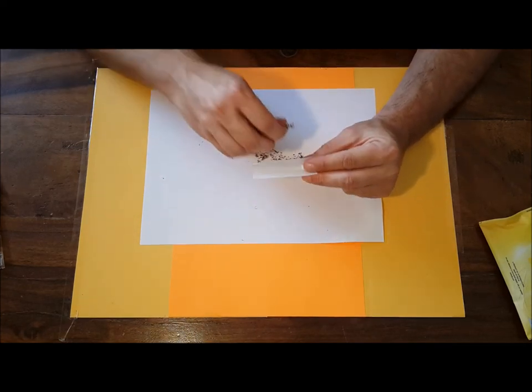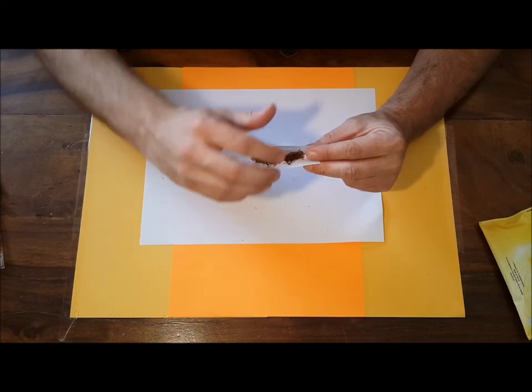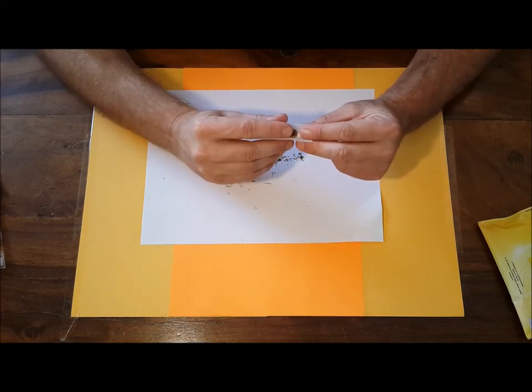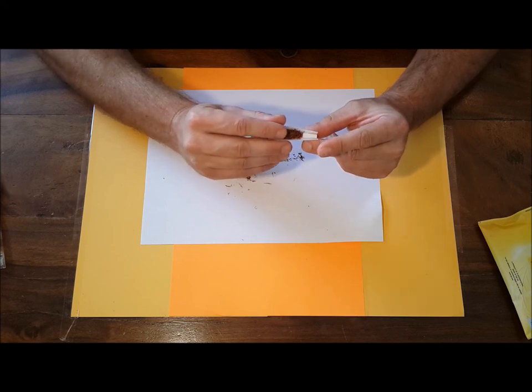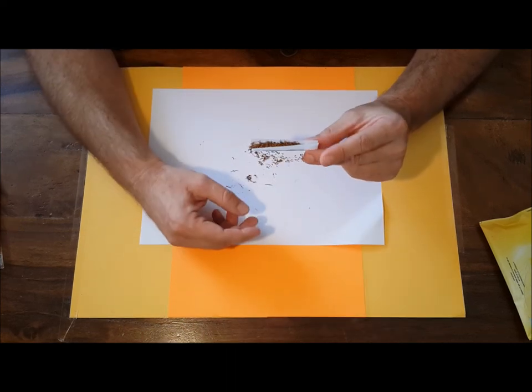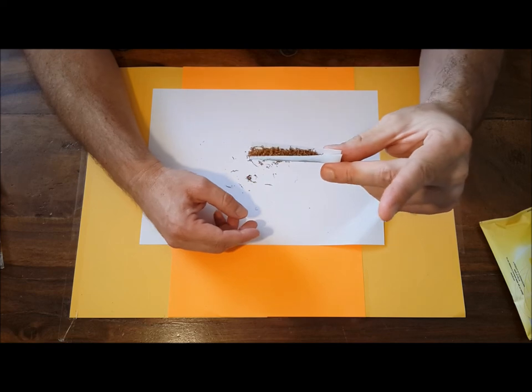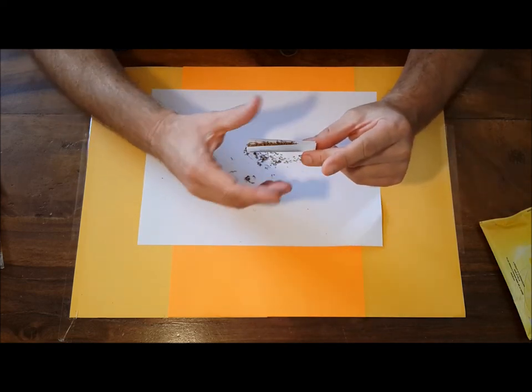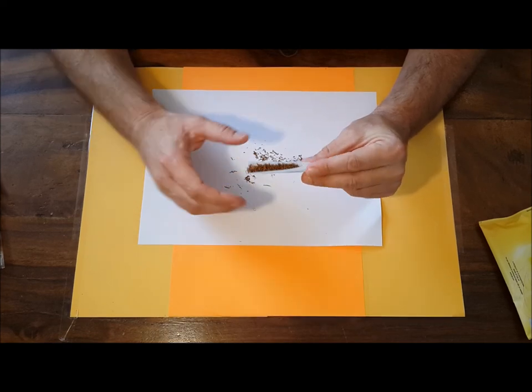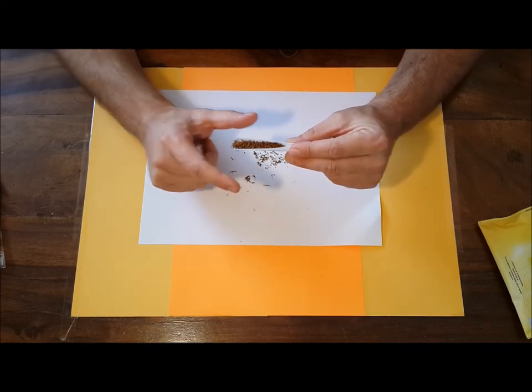And now I can easily put the tobacco here. I'm making mostly as I can equal tobacco line in it. I can feel in my finger if it's all equal, and after I'm sure, I put another two fingers, this one down and this one up.